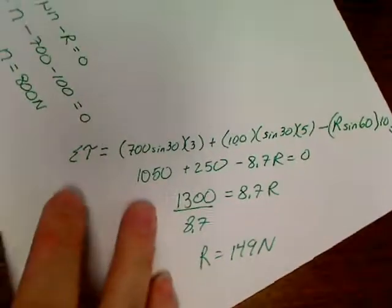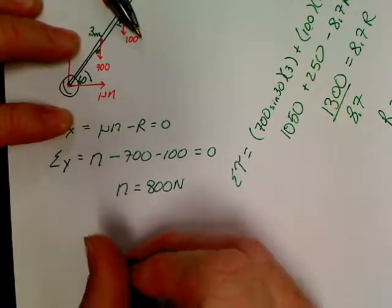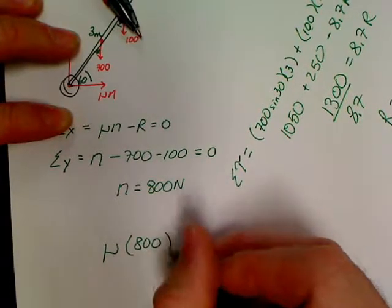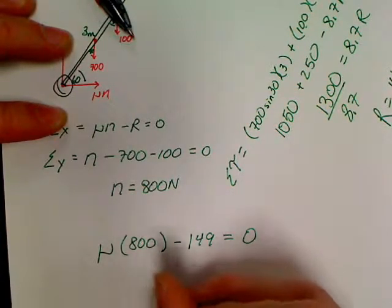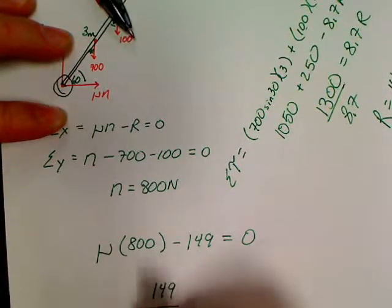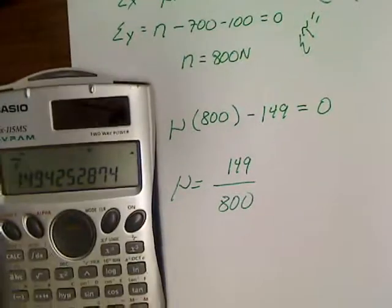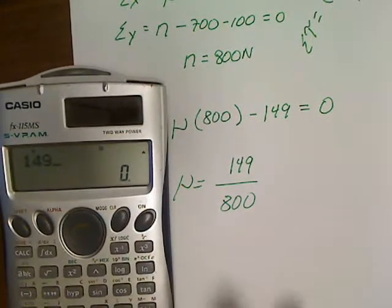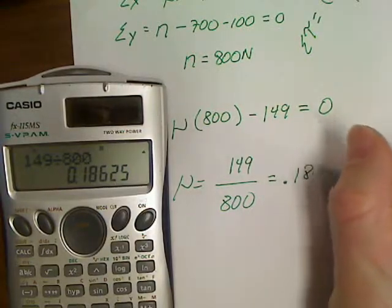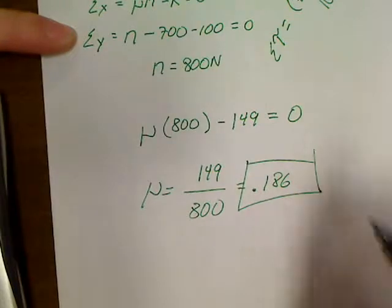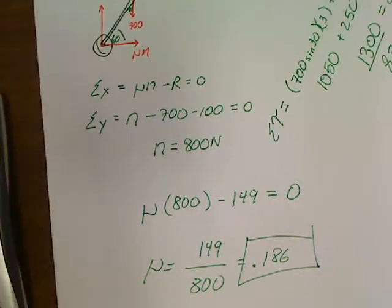And now that I've got R, I can just come back over here to this equation. And I can write mu times 800 minus 149 equals 0. So it's going to end up being 149 over 800 equals mu. Looks like I did a good problem here for a mu. So I'm going to have 149 divided by 800, and that's equal to 0.186 for a mu, which is a good-looking coefficient of friction. Nothing out of the crazy. And that is your generic problem.